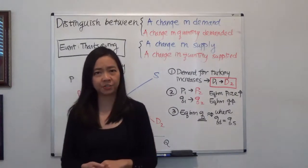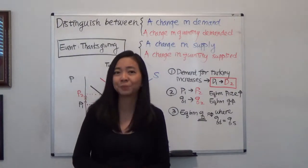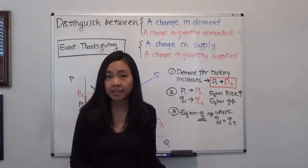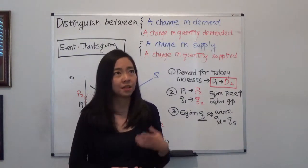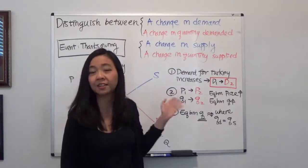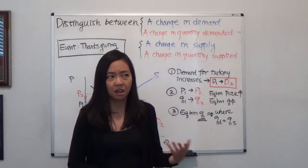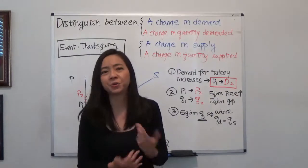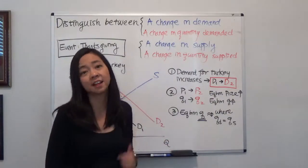Now we're going to ask ourselves, is there a change in supply? So you need to think about the supply side. Has there any change in, say, the technology of raising turkey? Not because of Thanksgiving, so no, there's nothing changed in the technology. Is there a bird flu? No, there's no bird flu. So you know that the supply side has not changed.